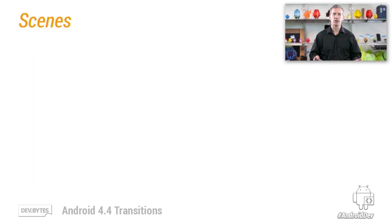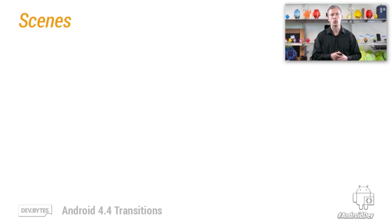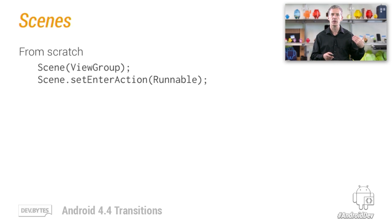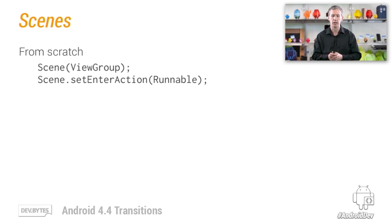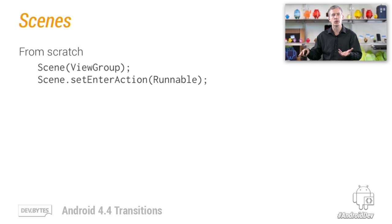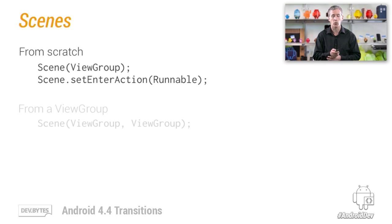So let's take a look at scenes. These are the modules that you've defined for your application, the different screens or states that your application will move through over time. Scenes always have a root or a view group associated with them, which is basically the hierarchy under which the scene lives and in which transitions will take place. You can construct a scene directly with that root, and then you can set an enter action — whenever that scene is entered, you will get a callback into your runnable, and you can run whatever code you want to make whatever manipulations you want to the view hierarchy.